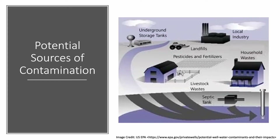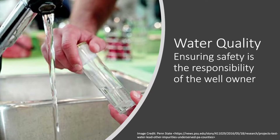The well log will also note the sources of contamination nearest to your well. These could be things like septic tanks, fuel tanks, or an unplugged abandoned well. For more recent wells, the log may include water quality test results. The EPA recommends testing your well annually for bacteria, nitrates, total dissolved solids, and pH levels.